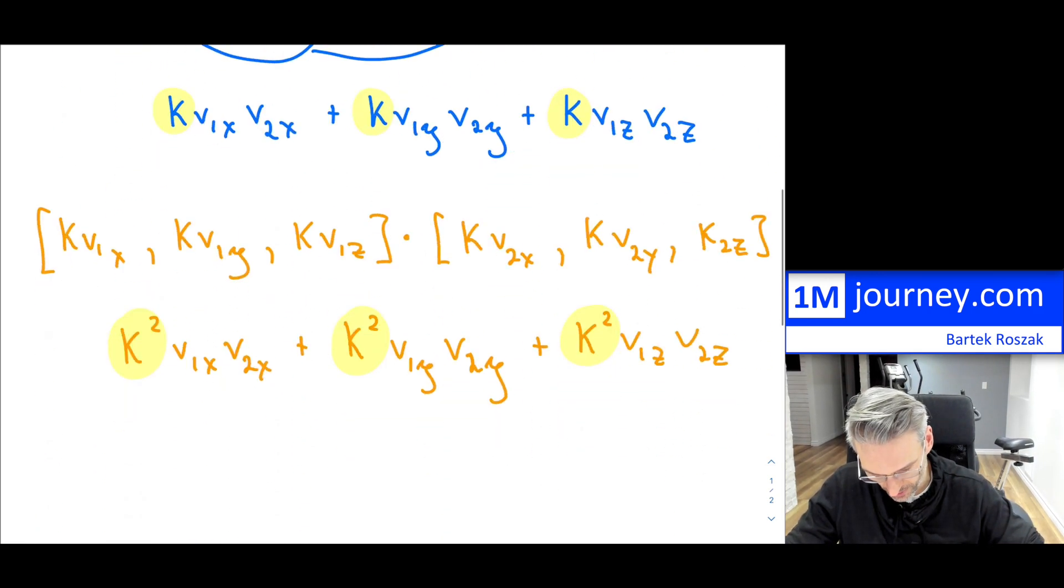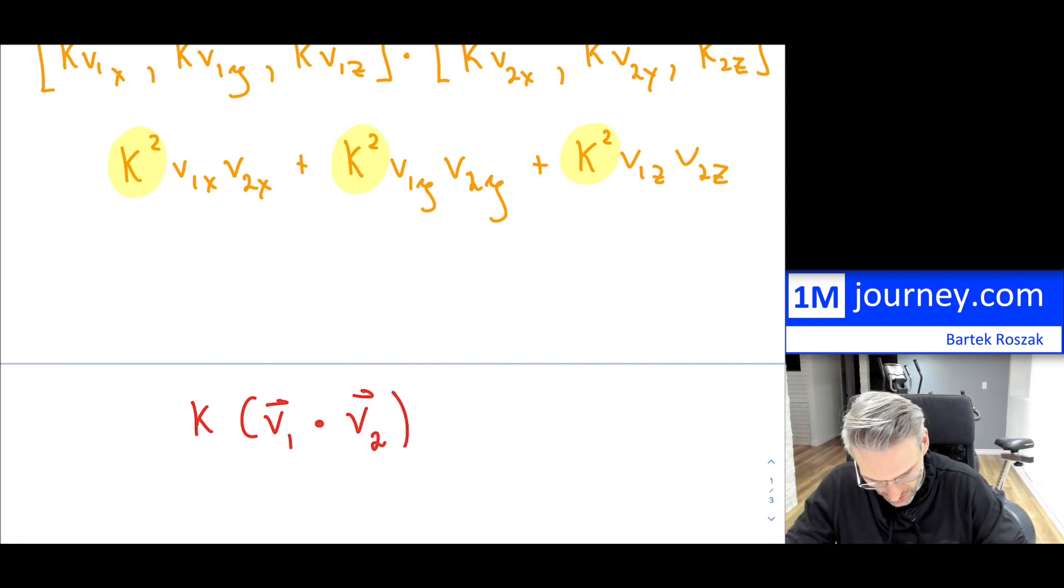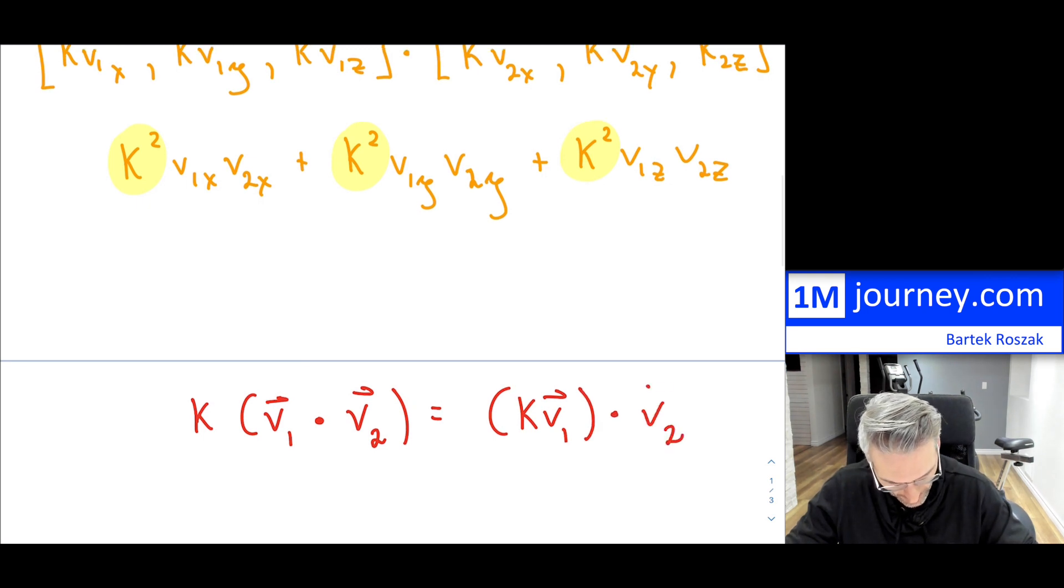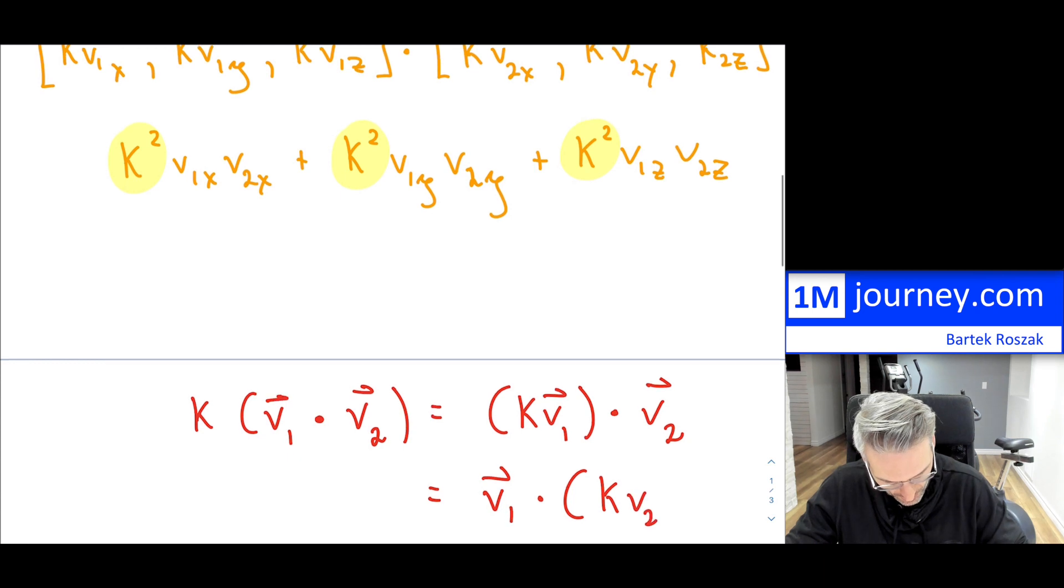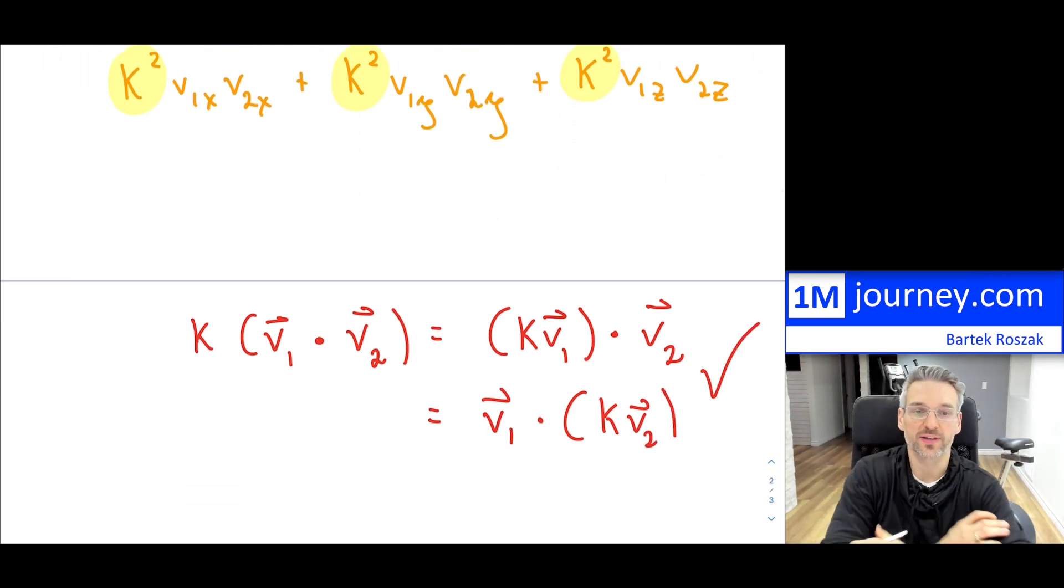In fact, the distributive property, you may recall, states that if you are multiplying the dot product between two vectors, then the distributive property simply states that it's going to be one of the vectors that is being scaled, dotted with the other one. Or you can distribute across the other vector, which would have been V1. And this is K V2. That is the distributive property and not the one that they've shown.